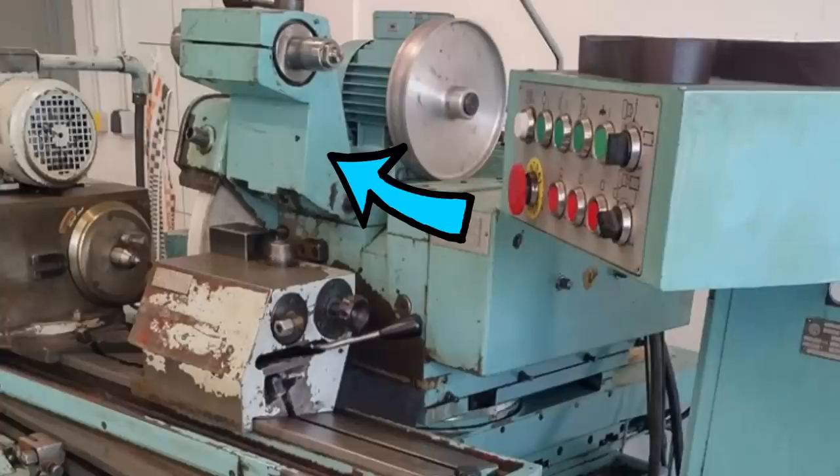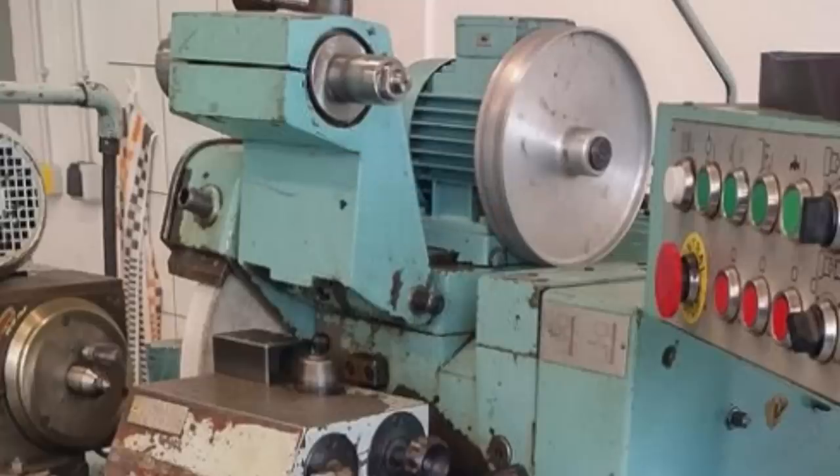This is the photo of the internal grinding attachment. That's the main accessory which Franz is still missing, so if any of you have any idea of where one of those internal grinding attachments is, please let us know. Get in contact and that'd be nice to complete this machine.